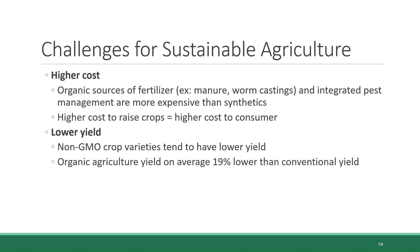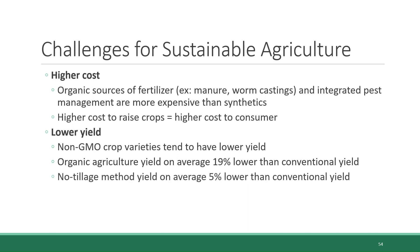The no-tillage method, which is part of conservation agriculture, has also been found to produce about a 5% lower yield on average compared to conventional agriculture. Nonetheless, alternative and sustainable agriculture are both still on the rise in spite of these challenges, which is a positive thing for both human health and environmental health.